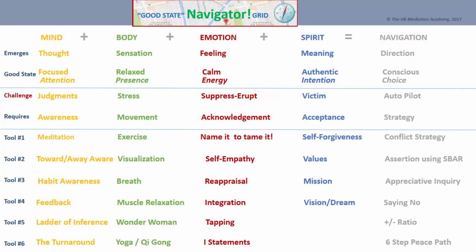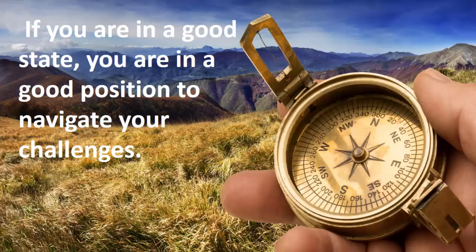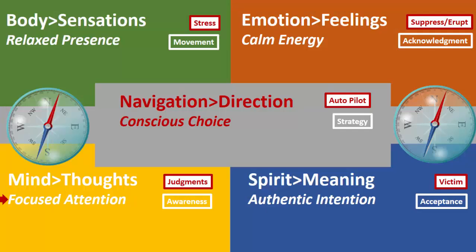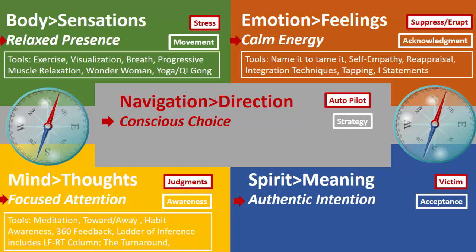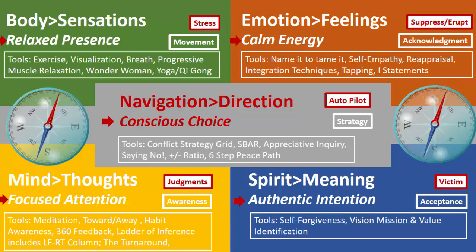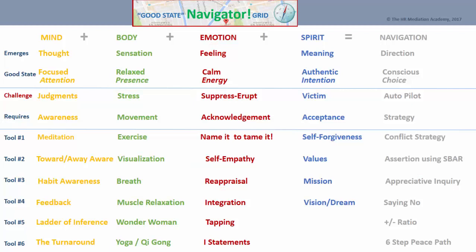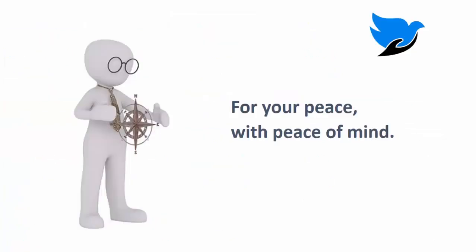So there we have it — not in depth, but a description of the elements of the grid with its two parts: awareness and tools. The basic premise is that if you are in a good state, you're in a good position to navigate your life challenges. Ideally, in a good state, we have focused attention, relaxed presence, calm energy, authentic intention, and have made a conscious choice. In subsequent videos we go in depth to flesh out what a good state means as an ideal in respect of mind, body, emotion, spirit, and navigation. Each of the tools will be defined and contextualized with a view to application — for the Good State Navigator Grid to be all it can be, for your peace with peace of mind. Thank you.